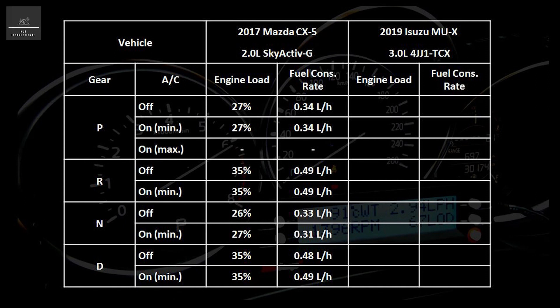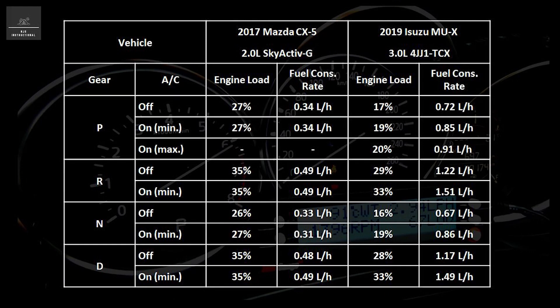Interestingly, the AC seems to have a greater effect in our second vehicle. The results show that both engine load and fuel flow rate of consumption increased enough to register on the Scan Gauge. With the transmission in drive and AC on, the engine load increased by 5 percent and the fuel flow rate of consumption increased by 0.32 liters per hour.